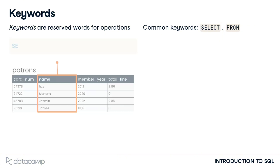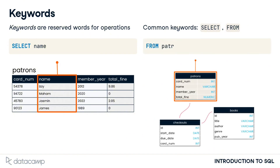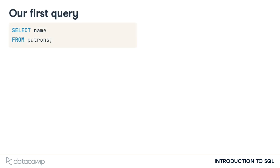Perhaps we'd like a list of every patron our library has. The SELECT keyword indicates which fields should be selected — in this case, the name field. The FROM keyword indicates the table in which these fields are located — in this case, the patrons table.